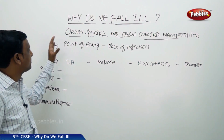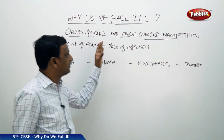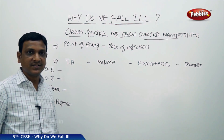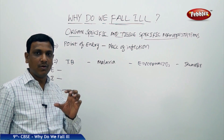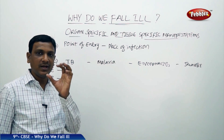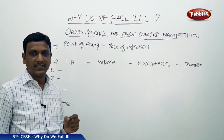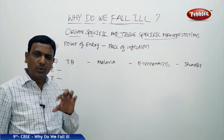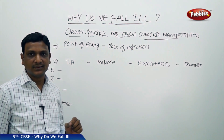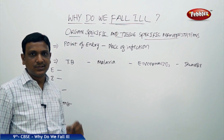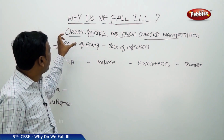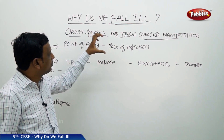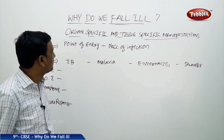Now let us look at the organ specific and tissue specific manifestations of disease. Earlier we discussed that certain microorganisms cause disease only at a particular part of our body — that is organ specific, or not even the part, only a particular tissue of that part. So diseases affecting a particular tissue or organ show specific manifestations.